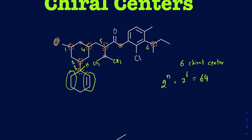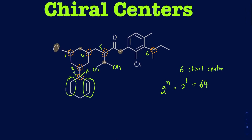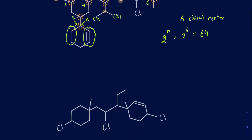Now that's going to be the maximum number of stereoisomers you could possibly have. You could very well have less than 64 if there is an internal plane of symmetry, and some of those isomers would be meso in that case. But this one doesn't really have any internal plane of symmetry, so you would still have a maximum of 64 stereoisomers.